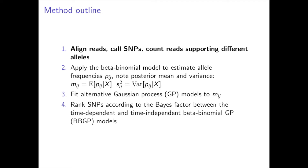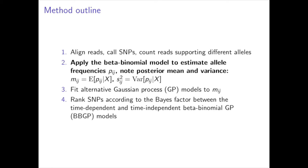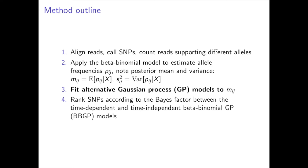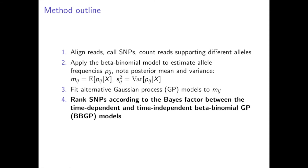First, we align the reads, we call SNPs, and we count reads supporting different alleles. Then, we apply the beta-binomial model to estimate allele frequencies, and we calculate posterior mean and variances. Later, by incorporating the calculated posterior variances, we fit alternative Gaussian process models. Finally, we rank the SNPs according to the Bayes factors between the time-dependent and time-independent beta-binomial GP models. From now on, we will call beta-binomial GP models as BBGP models.